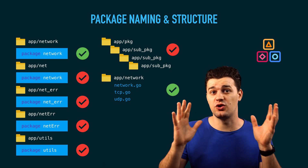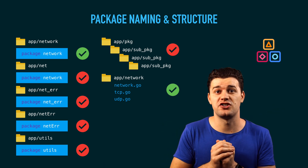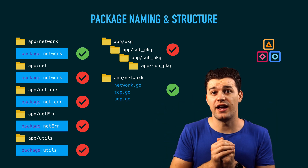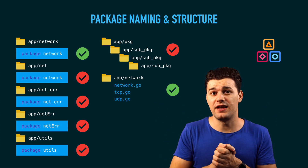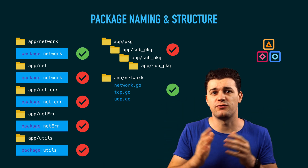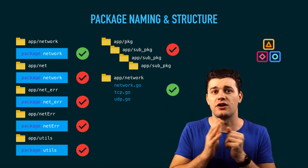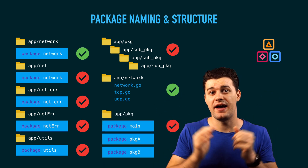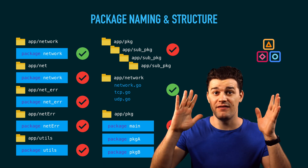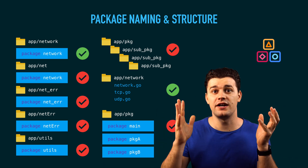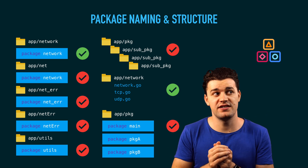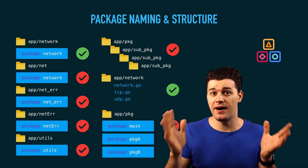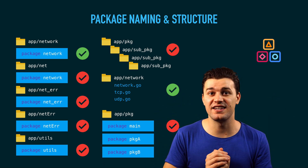When it comes to package structuring, if you have a package named network, it's good to have a file named network.go. That's why in the standard library you'll see files named exactly as the package name — meant for generic, common things used across the entire package. Another bad practice is having multiple package declarations inside one directory. If you have three files each declaring their own package, that's totally illegal — it won't compile.